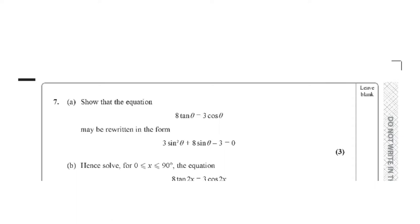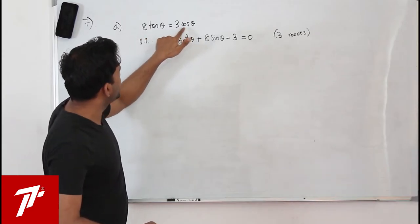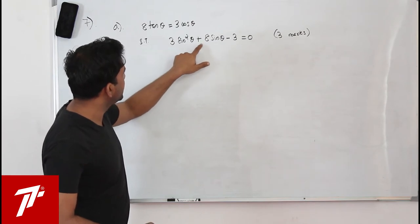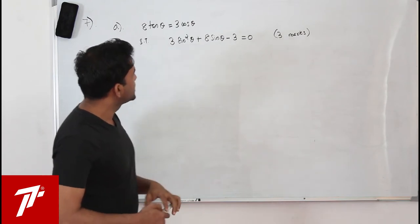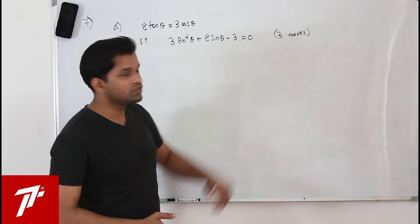Question number 7, Part A: show that 8 tan θ = 3 cos θ can be written in the form 3 sin² θ + 8 sin θ minus 3 = 0. This has 3 marks.